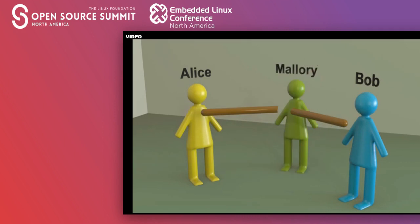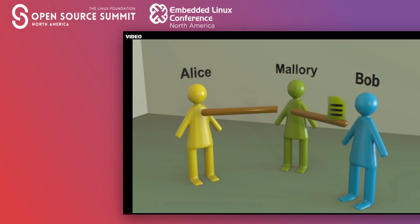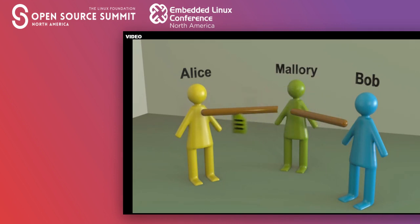Determining what Eve can do based on what messages she is able to see is the topic of threat modeling. A less obvious thing we might want to be true is that Alice and Bob are actually talking to each other. Our friend Mallory might try to pretend to be Bob when talking to Alice, and might pretend to be Alice when talking with Bob. Alice and Bob might not even realize that Mallory is doing that, maybe because they are writing letters and Mallory works at the post office, or they are sending emails and Mallory has broken into the mail server.